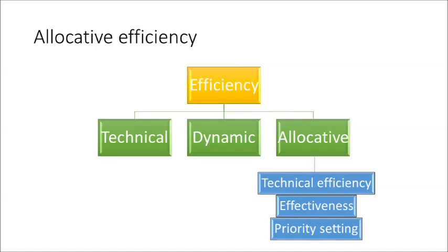Allocative efficiency relates to ensuring the best allocation of resources has been provided in the healthcare system. This is further divided up into three component parts: technical efficiency, effectiveness, and priority settings. These would include the consideration of public health campaigns, for example.